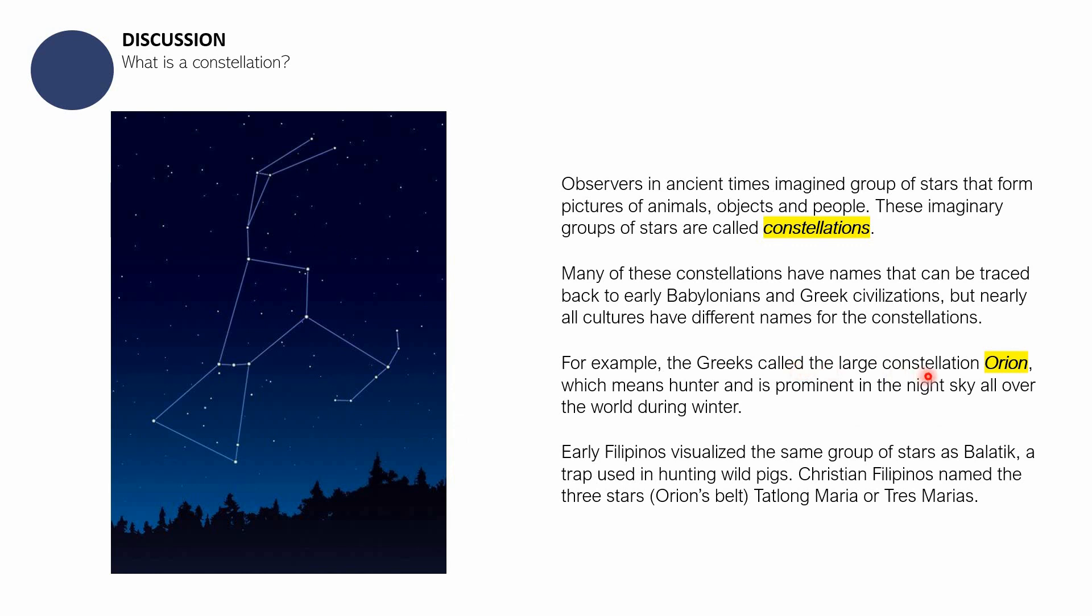Balatik is a trap used in hunting wild pigs. The same constellation observed by two different cultures. For the Greeks, they call it a hunter. They named it after a hunter, whereas for Filipinos they named it after a tool that they use in hunting wild pigs. For Christian Filipinos naman, these three stars, the Orion's Belt for the Greeks, are called the Tatlong Maria, or Tres Marias. Iba-iba yung pagpapakahulugan natin sa kanila. Iba-iba yung kultura.